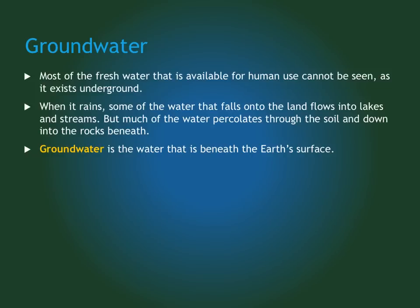Groundwater is the water that we cannot see most of the time, because it exists underground. When we see it rain, we see water flow off the land into a river or a creek, to lakes or oceans, but a lot of that water percolates or flows through the soil and down into the rocks beneath. Think of a coffee pot — water gets put on top of the coffee grounds and soaks through. That's called percolation. Groundwater does the same thing: water moves through the soil, rocks, and gravel, and eventually gets stored underneath Earth's surface. Groundwater is defined as the water beneath Earth's surface.